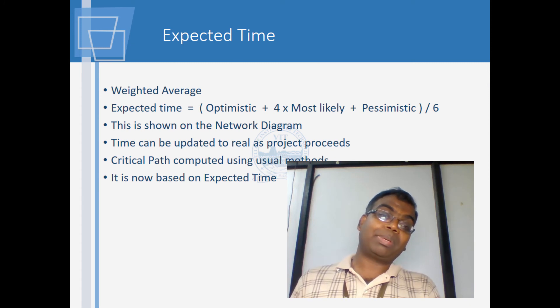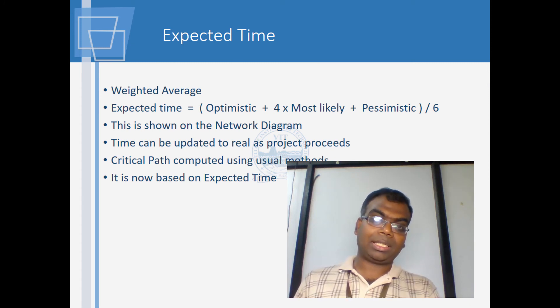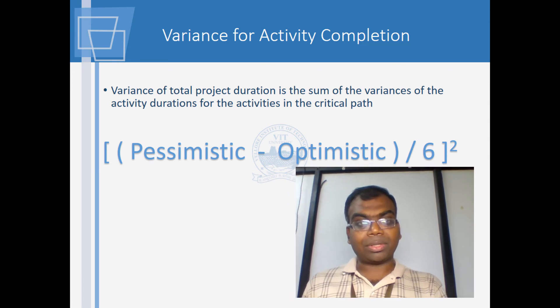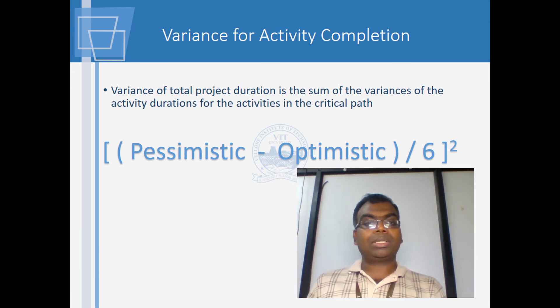The critical path is estimated as per the usual methods — we go by the forward path and backward path, or we build a table, put in values, calculate the times, and fill in the results. This is what the computer actually does. It is based on expected time rather than the deterministic time used in CPM. Here is the variance for activity completion.